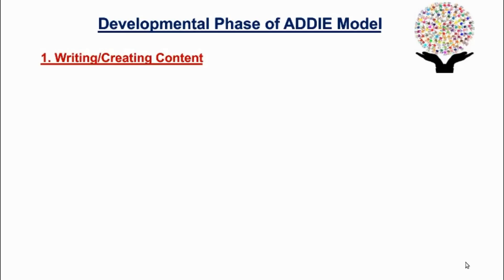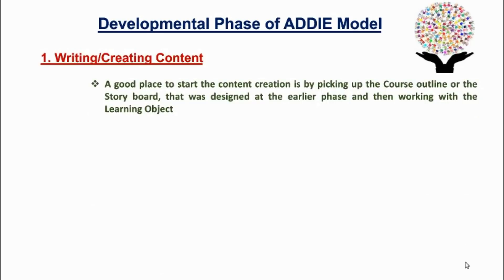It is about once the course has been designed, how do we plan to implement those ideas in every section of our content. So from where should we start? Then often a good place to start the content creation is by picking up the course outline or the storyboard which was designed at the earlier phase, and then working with the learning object.